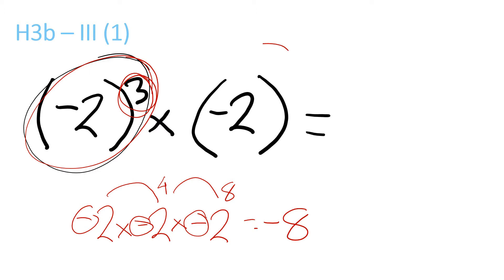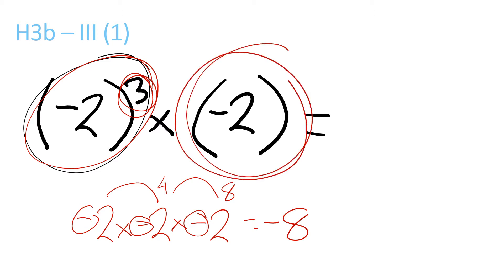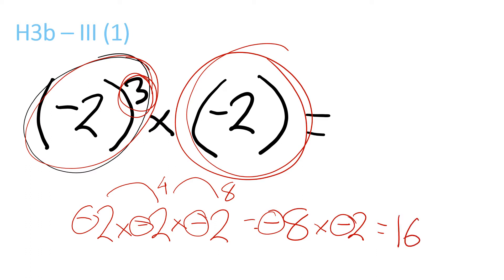And then we still have this minus 2 up here, so we've got to do minus 8 times minus 2. Which is — since it's even, the amount of minuses, there are 2 minuses, it would be a plus. 8 times 2 is 16.